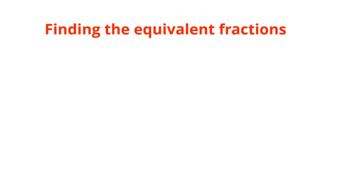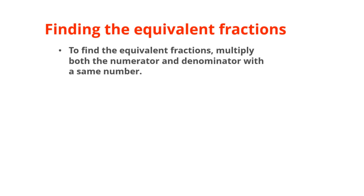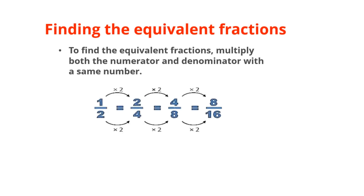How to find equivalent fractions? To find an equivalent fraction, multiply both the numerator and denominator by the same number. For example, take 1 by 2. Multiply both numerator and denominator by 2 to get 2 by 4. So 1 by 2 equals 2 by 4. We can also multiply by 3, 4, or any number — whatever we multiply with the numerator, the same number must be multiplied with the denominator.